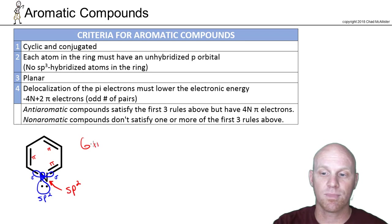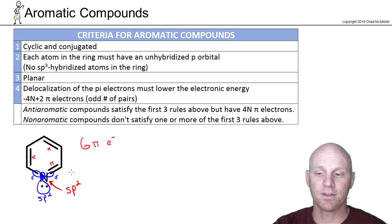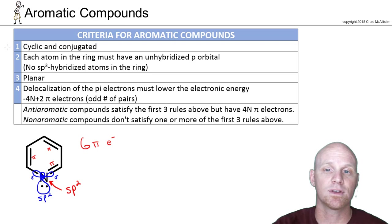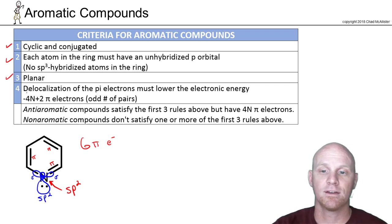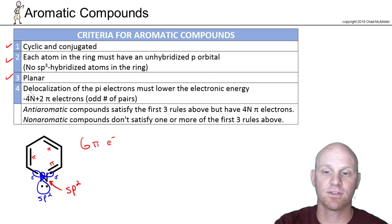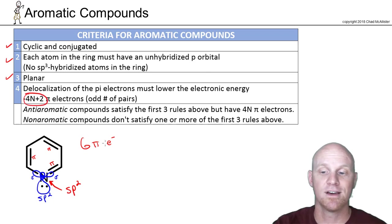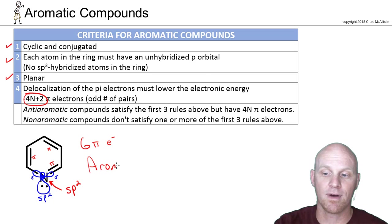With 6 pi electrons, let's go back through the rules for pyridine. It is cyclic and conjugated. There are no sp3 hybridized atoms. It's a ring of seven atoms or smaller, so it can definitely be planar. And 6 pi electrons is a 4n+2 number — an odd number of pairs — and that makes this compound aromatic.